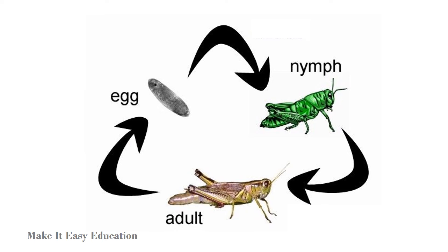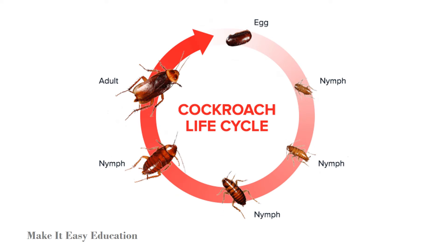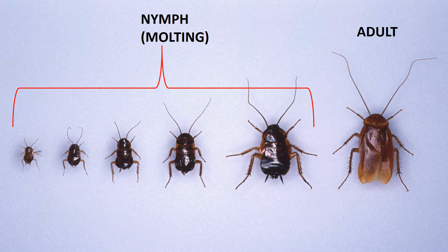In incomplete metamorphosis, an animal goes through three different stages in its life cycle. First, the animal hatches from the egg as a nymph. Nymphs look like tiny adults but they don't have wings. As the nymph grows larger, it molts. Molting happens when an insect sheds its hard outer skeleton. After several molting stages, the insect, which now has wings, reaches its adult stage.